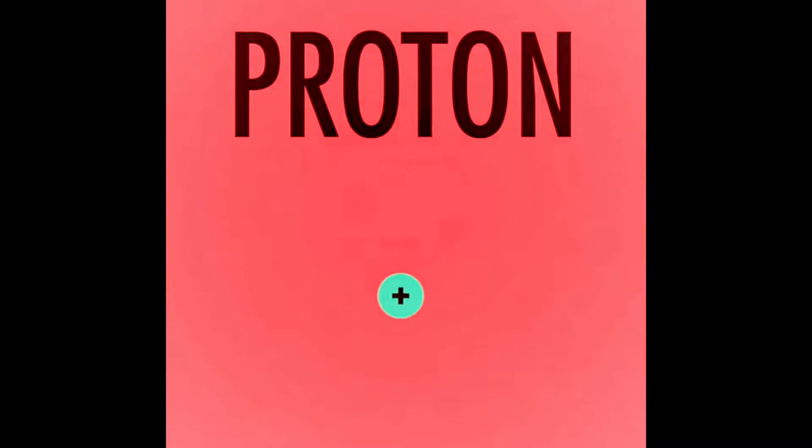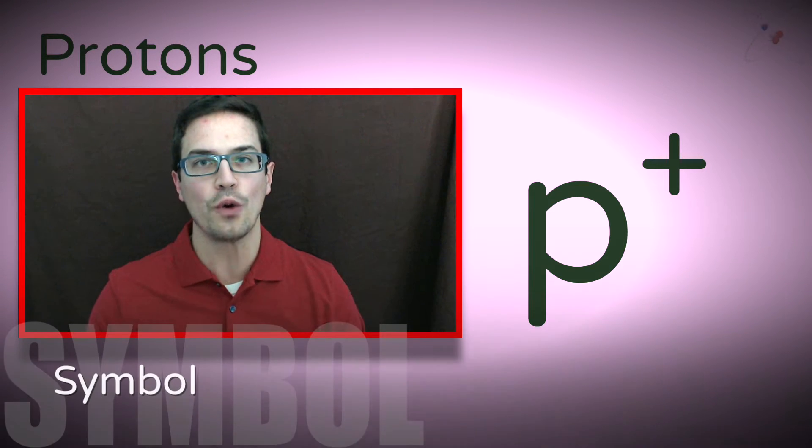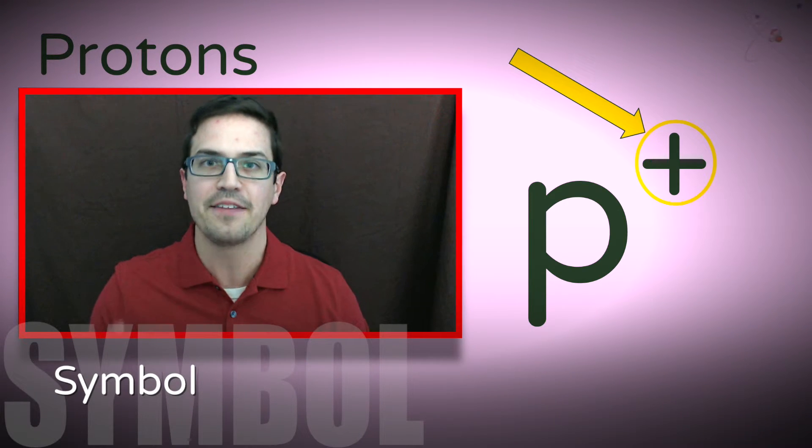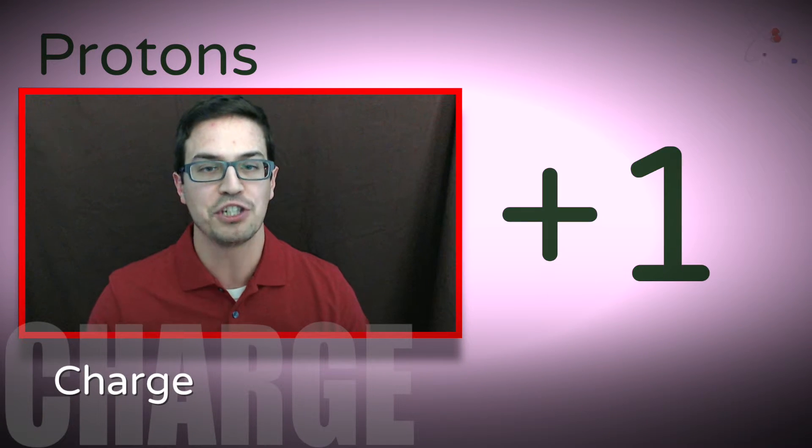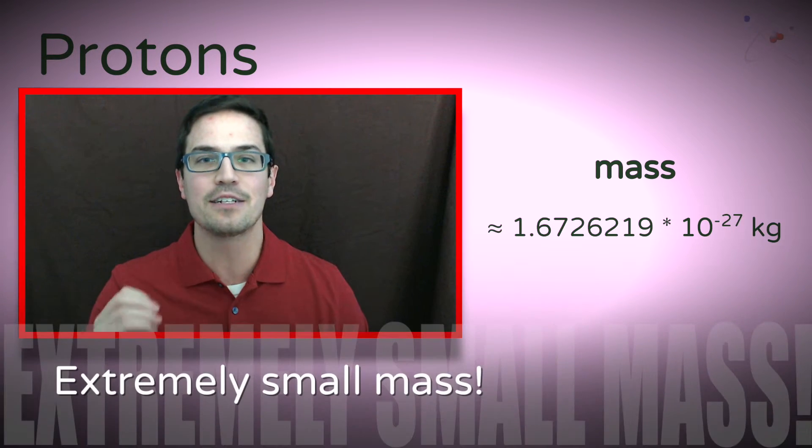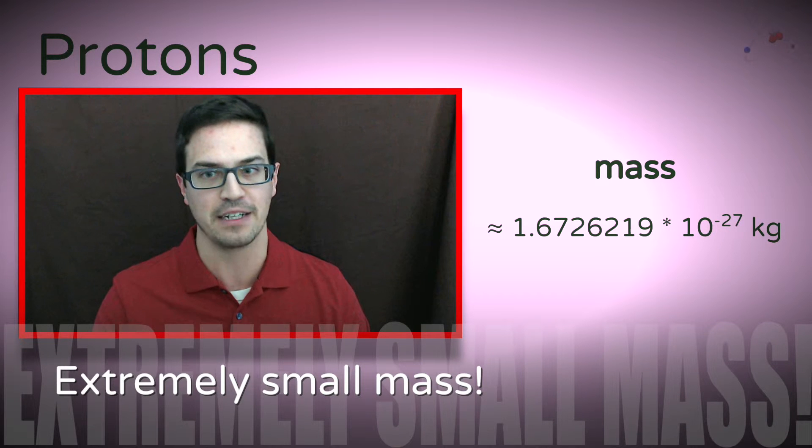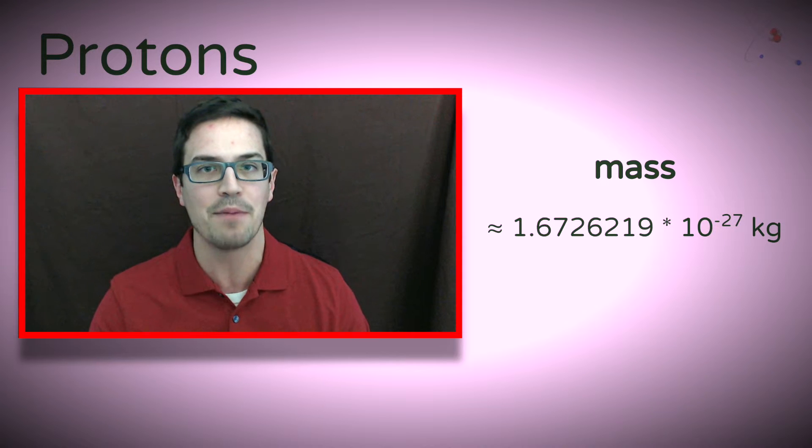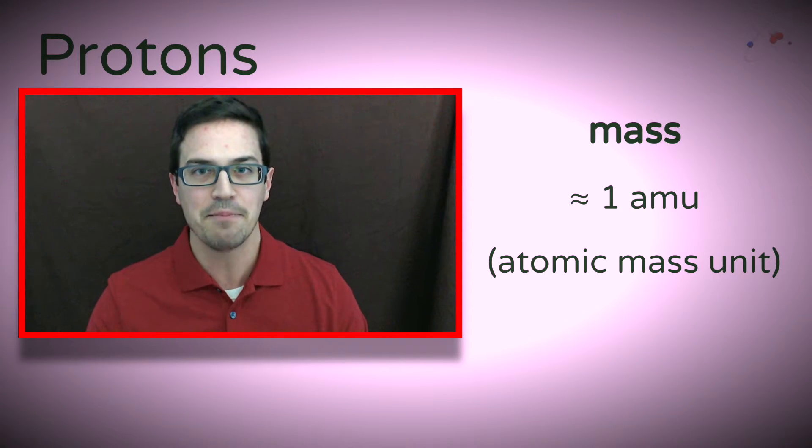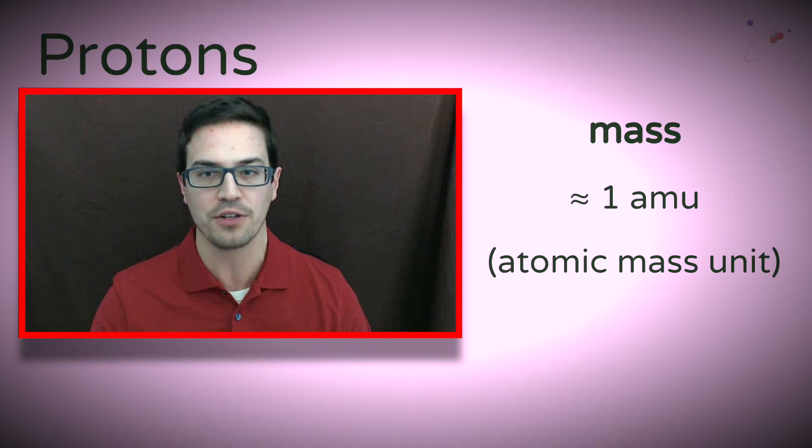Let's start with protons. A proton has the symbol of a lowercase p with a plus sign in the upper right corner. The plus sign represents the charge of the proton, which is plus one. Its mass is extremely small compared to everyday things. Because of this, scientists have given it a different unit of mass called the atomic mass unit. This makes it easier to say masses of atoms and subatomic particles.